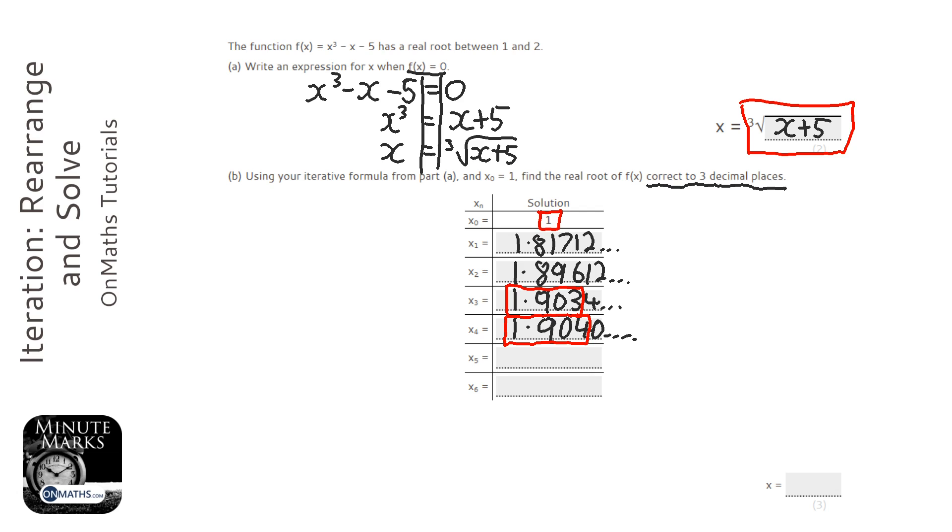Cube root, answer plus 5, and we've got 1.9041... Now even if you were to carry on going, the first digits - the digits I've circled with a red square - are going to remain the same. So as soon as you get two that are the same to three decimal places, that is your answer. So my answer is going to be 1.904.